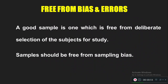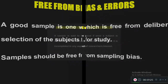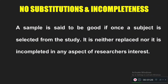The second characteristic is free from bias and error. When collecting the sample, don't commit errors and don't give any chance for bias. A good sample must be selected following the sampling plan — a well-designed plan must be in hand to select the sample, and by having a good sampling plan we can avoid bias and errors. The third characteristic is no substitution and incompleteness: every sample selected must give complete information.